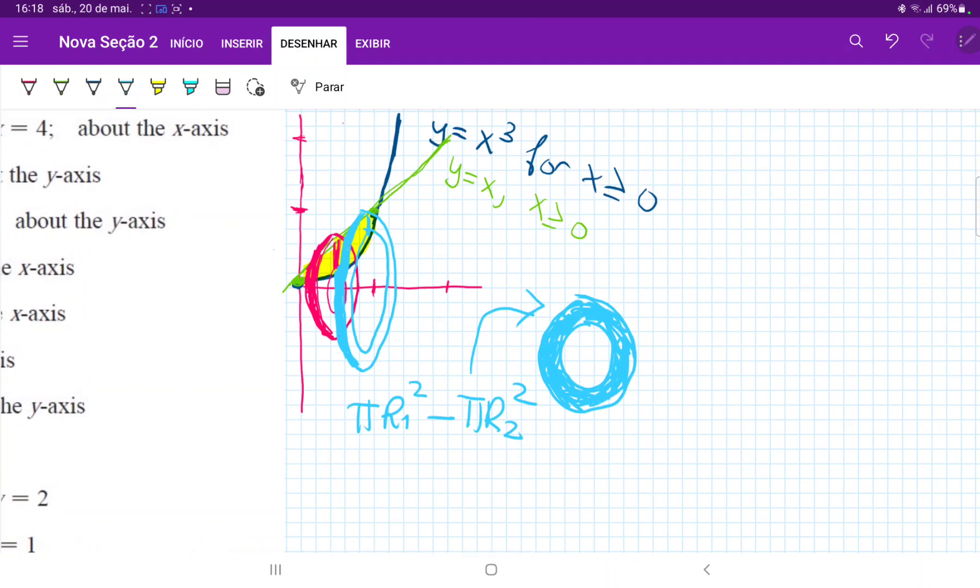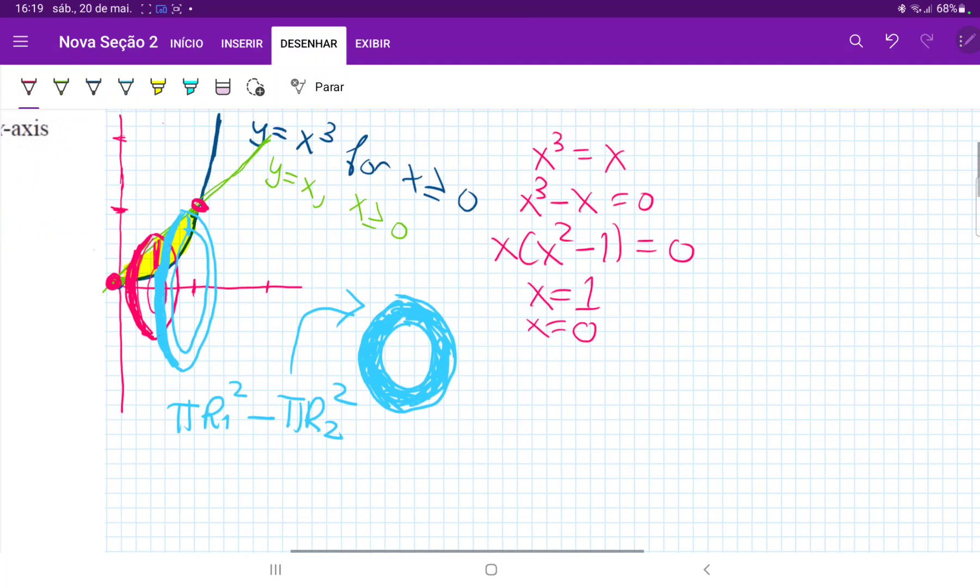So we're going to set up our integral, and before we can set up our integral, we do need to know where these curves intersect. So we're just going to set them equal to each other. So X cubed is equal to X. I'm going to bring everything over to one side minus X is equal to zero. And then I'm going to factor it. So I have X times X squared minus one is equal to zero. So we can see that one of the solutions is X is equal to one, and X is equal to zero is another solution. So our solutions are this point that connects it and this point over here, which are our boundaries of integration.